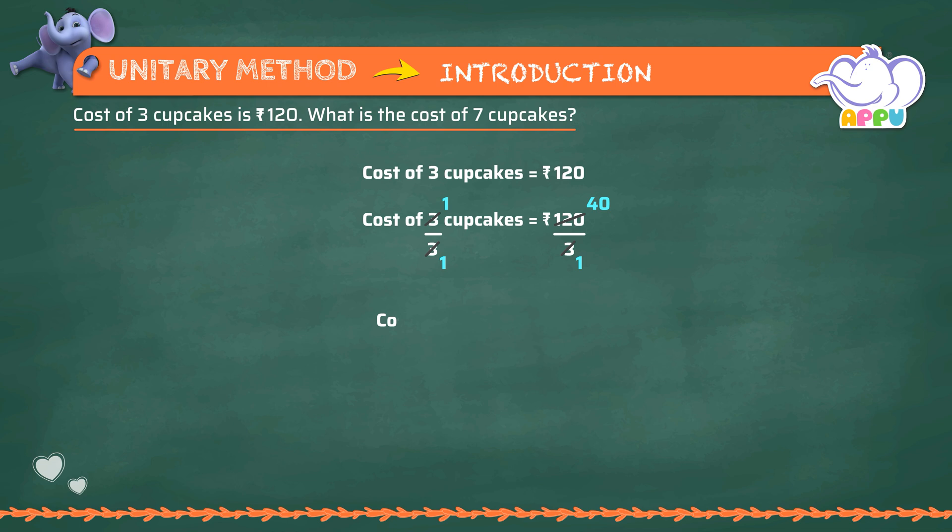Cost of one cupcake equals rupees 40. To find the cost of seven cupcakes, we multiply both sides by seven. Seven times one cupcake equals seven cupcakes. Seven times rupees 40 equals rupees 280.